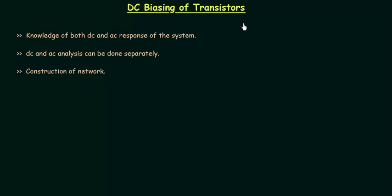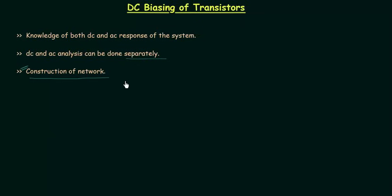From this lecture we will start biasing of transistors. The analysis of a transistor as an amplifier requires knowledge of both DC and AC response. We can do DC and AC analysis separately, but the parameters chosen in DC analysis will affect the AC response and vice versa. Once the desired DC current and voltage levels are defined, we construct a network to establish the desired operating point. Biasing is the process in which we apply external DC voltages to select the appropriate operating point, and such networks are called biasing networks.